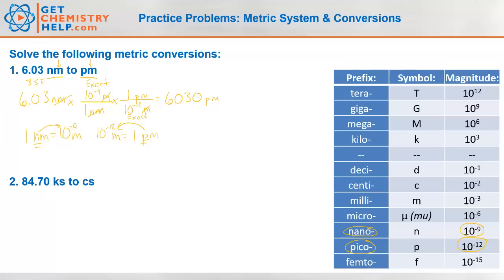So 3 sig figs are the fewest, so this should only have 3 sig figs. The clearer way to show this without the ambiguous zeros on the end would be in scientific notation. You might also write that as 6.03 times 10 to the 3rd. If you're not familiar with scientific notation, there is a video lesson available at getchemistryhelp.com that explains that. So 6.03 nanometers is 6.03 times 10 to the 3rd picometers.